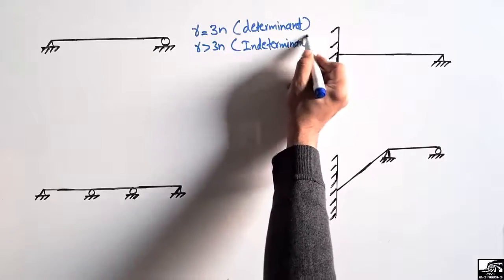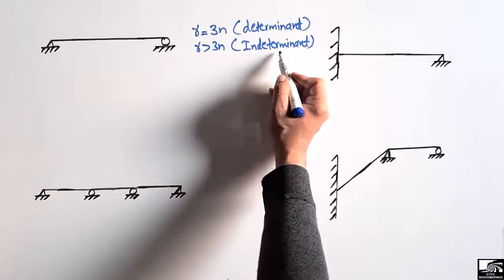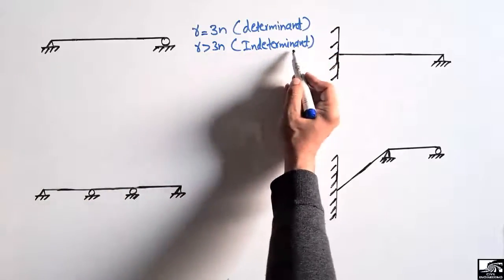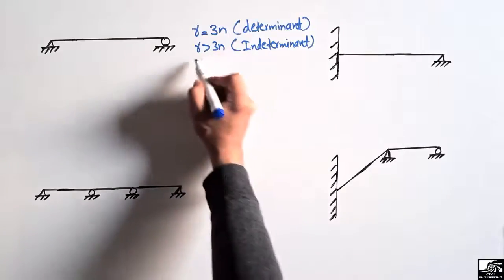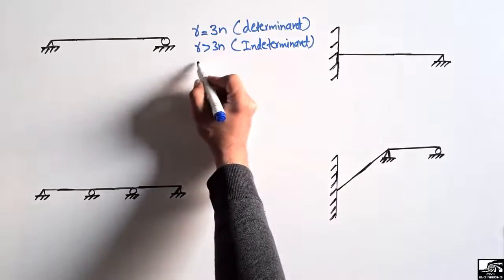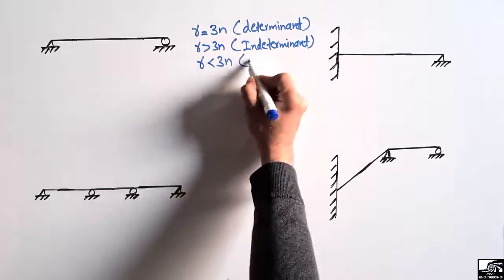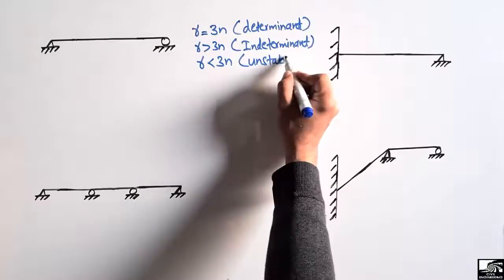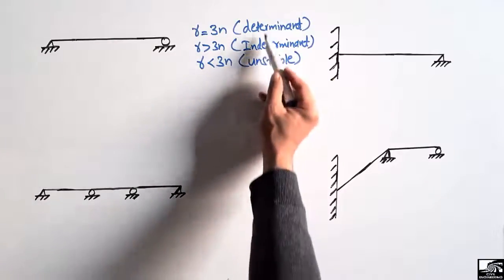An indeterminate beam cannot be solved by simple equilibrium equations — we need additional methods to find the support reactions. The third case is when R is less than 3n; such a beam will be an unstable beam, while the other two types are always stable.